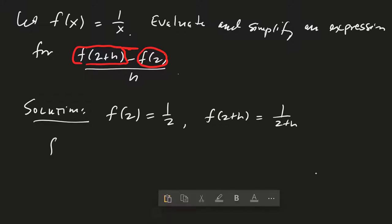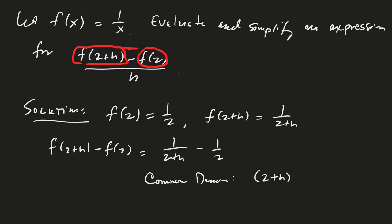So therefore, my numerator f(2+h) minus f(2) can be written as 1/(2+h) minus 1/2. And now if I want to try to simplify this a little bit, I can find a common denominator. And so the common denominator, in this case, would be (2+h) times 2.